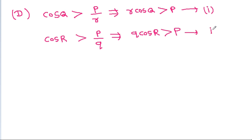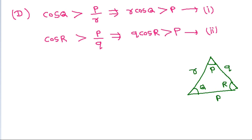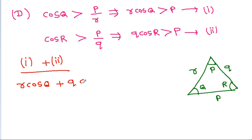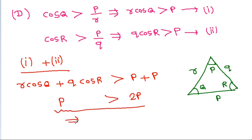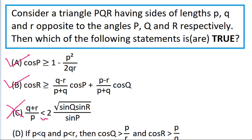Labeling these as equations 1 and 2, and considering triangle PQR with sides p, q, r — if we add equations 1 and 2, we get r cos Q + q cos R > p + p = 2p. But by the projection formula, r cos Q + q cos R = p. So p > 2p, which implies p is negative. Since p is a side length of the triangle, p < 0 is not possible. So option D is wrong.